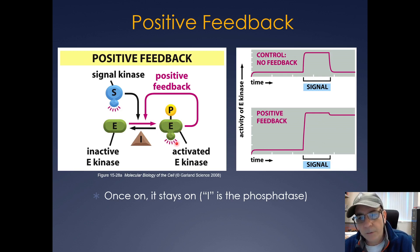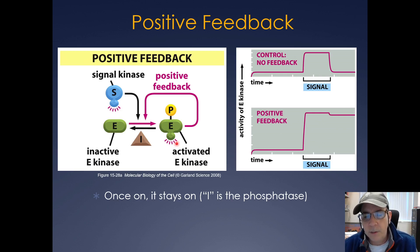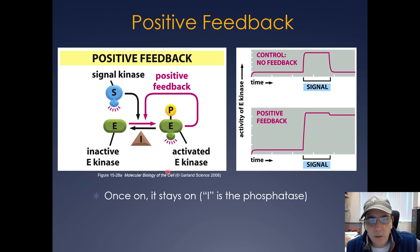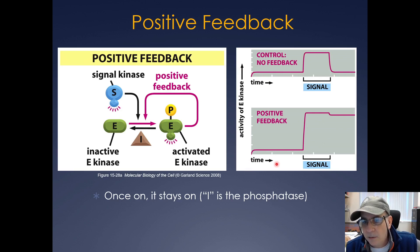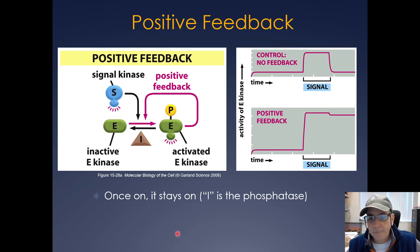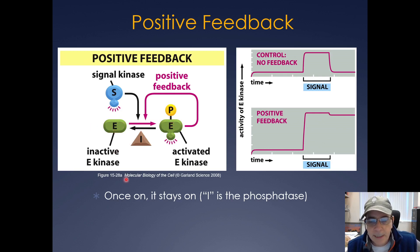We'll see examples like this when we get to the cell cycle. The I-rate here is a phosphatase — it removes the phosphate and drives the activated E kinase back to its inactive form. Without feedback, the signal returns to baseline when lost. With positive feedback, the response remains high even after the signal is gone.